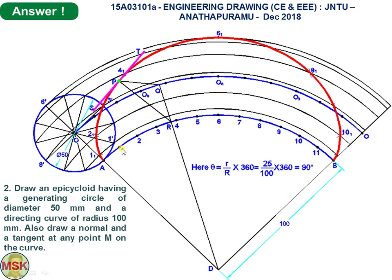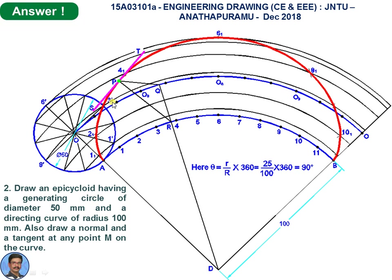After one-twelfth of rotation, center O moves to O1. Similarly O2, O3, O4, O5, O6, O7, O8, O9, O10, O11, and finally O12. With O1 as center and 25 mm as radius, cut an arc on the arc drawn through O' with D as center. This gives point 1-1.